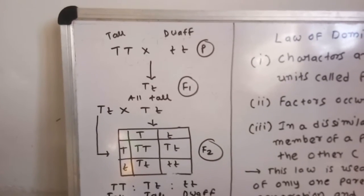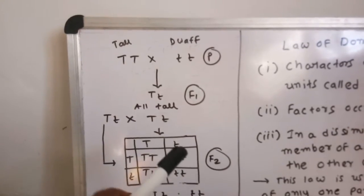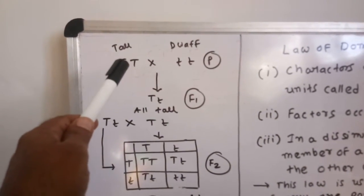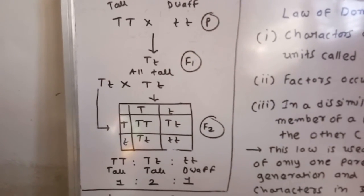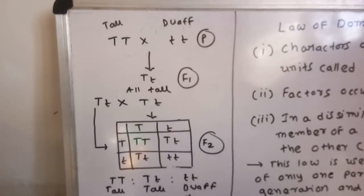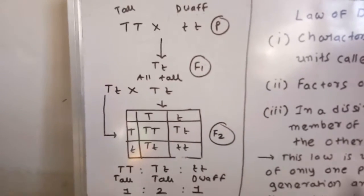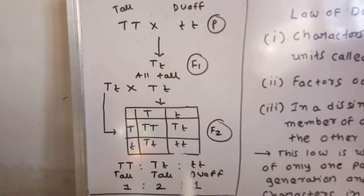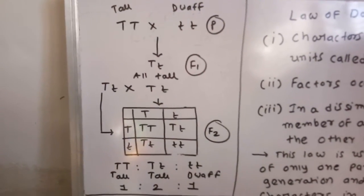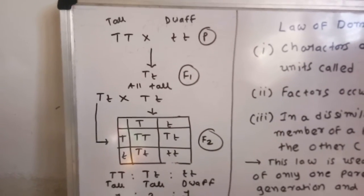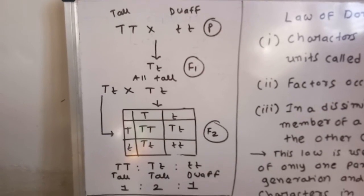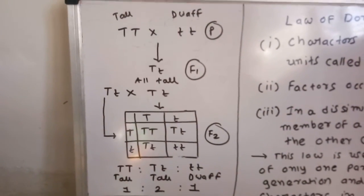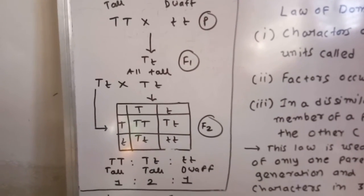Because of this law of dominance, we are getting all F1 plants showing a single parental expression — one parent's character is expressed, which is tallness. And in the F2 generation, there is a three-to-one expression of both parent phenotypes. Because of the law of dominance, we get only single parent expression in the F1 generation, and both parent character expression in a three-to-one ratio in the F2 generation.